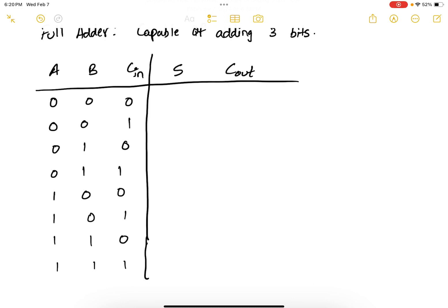Now, when you add zero plus zero plus zero, your sum is zero, carry is zero. When you add zero plus zero plus one, sum is one, carry is zero.